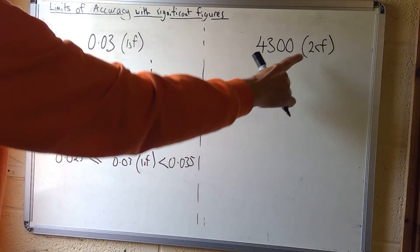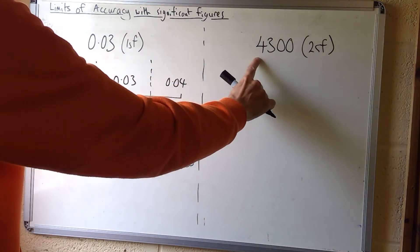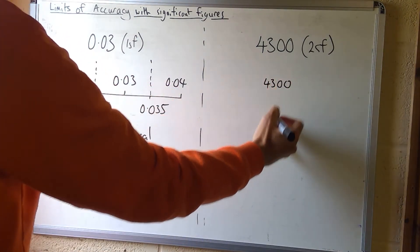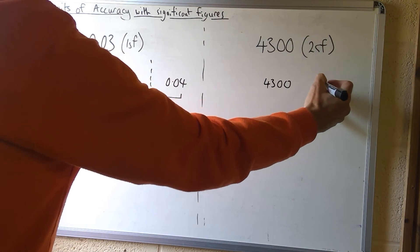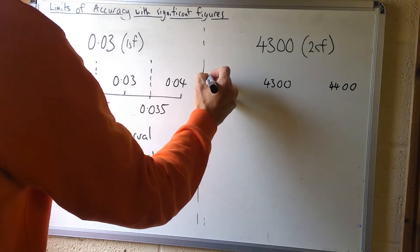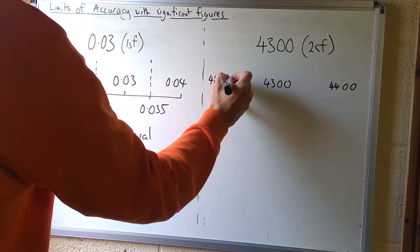The second example has been rounded to two significant figures and it's a larger number: 4,300. The next number with two significant figures will be 4,400, and the previous one 4,200.